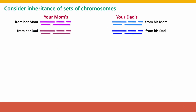We'll consider inheritance of sets of chromosomes coming from your mother and your father, pretending there are only five chromosomes for simplicity. Your mom has two sets of chromosomes she inherited from her parents — a set from her mom and a set from her dad. They're drawn as if kept separate, but in fact they're mixed together in the cell; when the egg meets the sperm the chromosomes mix together and the cell doesn't keep track of which parent they came from. Similarly, here are the two sets in your dad, from his mother and his father.